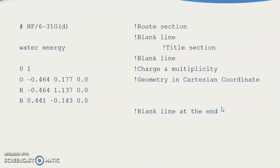You can see hash HF — this is short form of Hartree-Fock — slash 6-31G(d). This is the root section. Then you have a blank line. Then you have the title section, just like 'water energy'. Then you have a blank line. Then you have charge and multiplicity: 0 and 1. Then you have geometry in Cartesian coordinates. Then you have a blank line at the end.